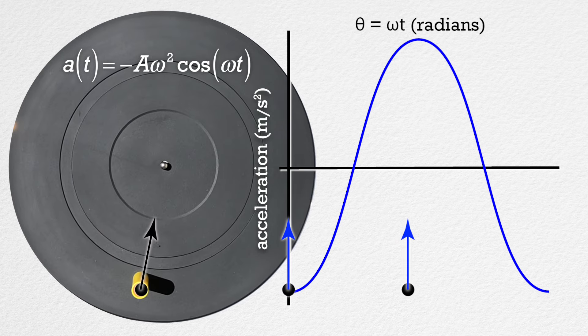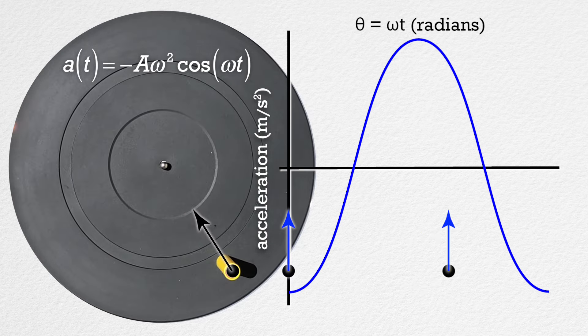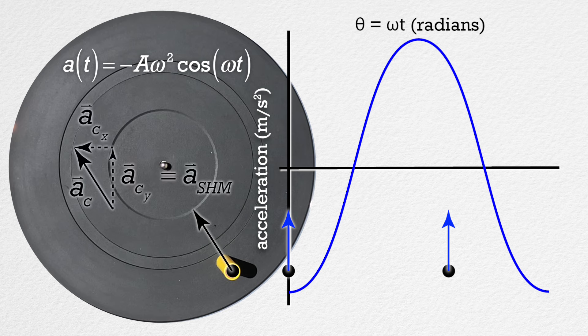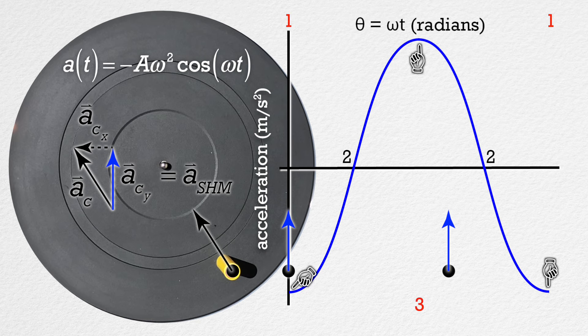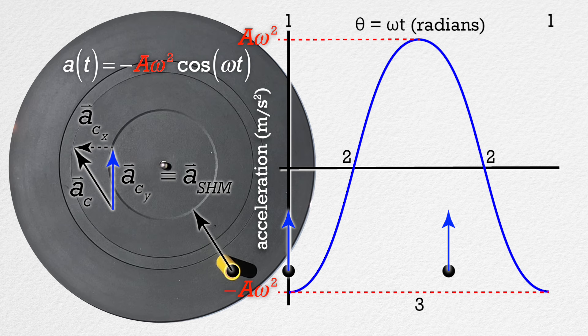Could you pause it again? The acceleration of the object in simple harmonic motion is the vertical component of the centripetal acceleration of the yellow marker cap moving in circular motion. And you can see how the acceleration has its maximum magnitude at positions 1 and 3, and the acceleration is zero at position 2. The acceleration's maximum magnitude must equal amplitude times angular frequency squared. That is pretty cool.